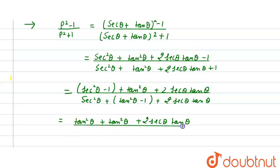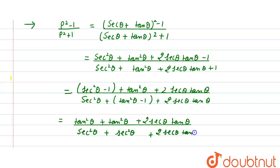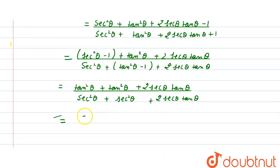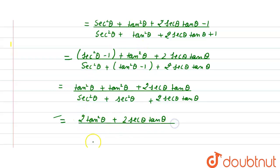In the denominator, we get sec²θ + sec²θ + 2 sec θ tan θ, which becomes 2 sec²θ + 2 sec θ tan θ.